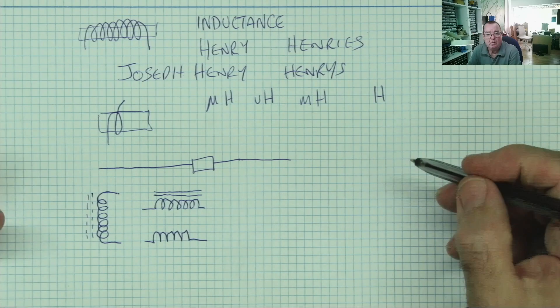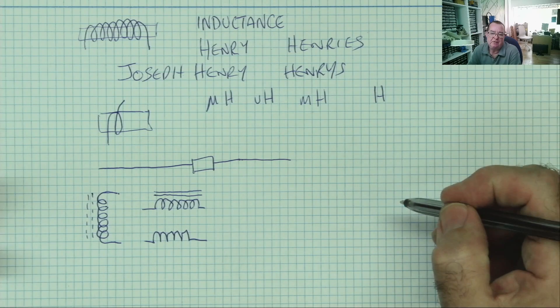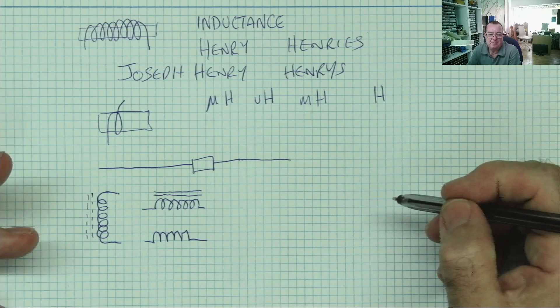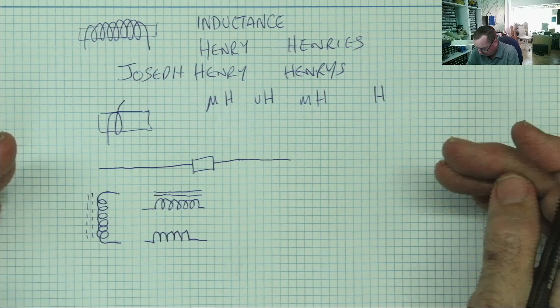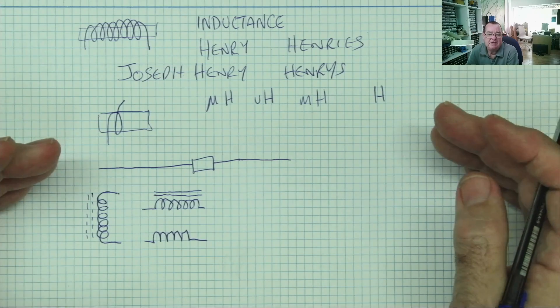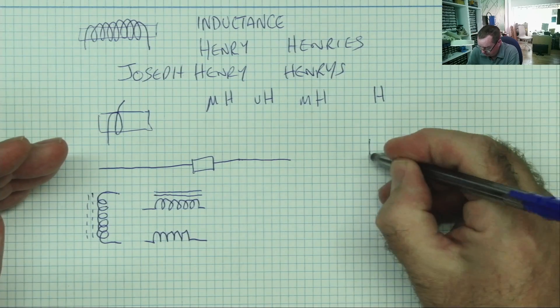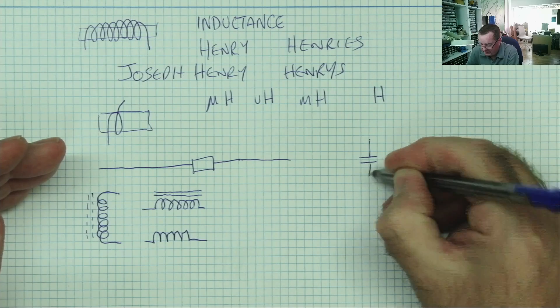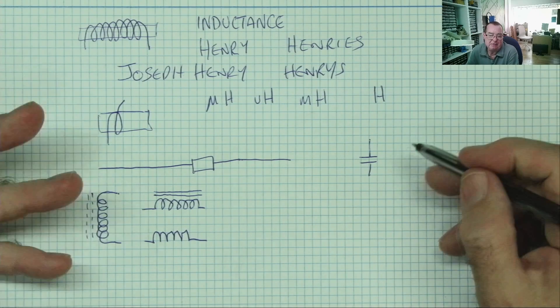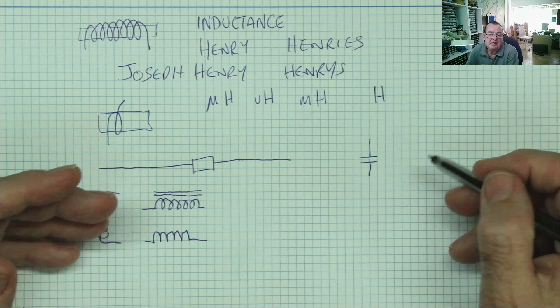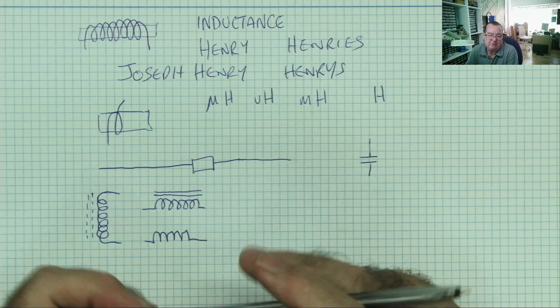Well, an inductor is a bit like a capacitor in one respect, because it stores electrical energy. But whereas a capacitor stores electric energy in an electric field, an inductor stores energy in a magnetic field.